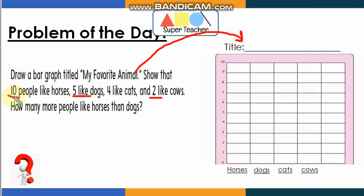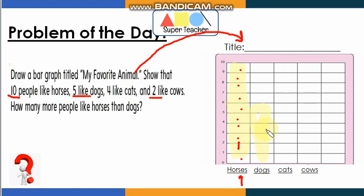Now let's color the graph. How many people voted for horses? 10 people, so we're going to color 10 boxes. 5 like dogs, so color only 5 boxes. 4 like cats — color 4 boxes. And 2 like cows — color only 2 boxes.